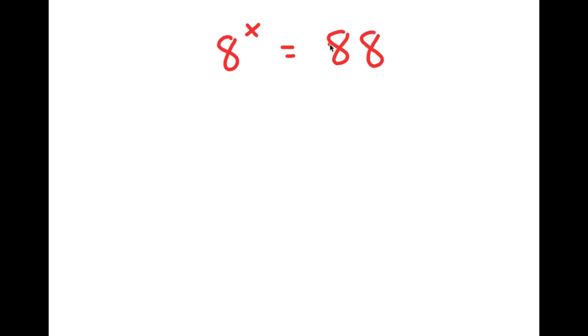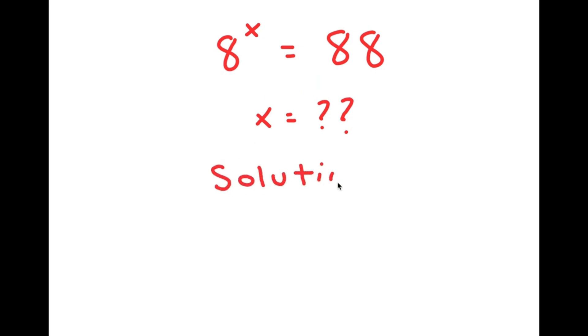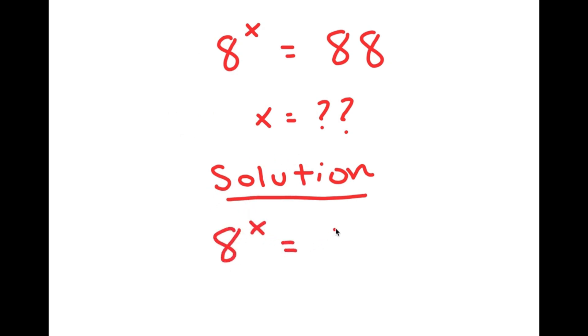In this video, I'm going to be solving the equation 8 to the power of x is equal to 88. My only variable is x, so that's what I'm going to be solving for. I'll start by rewriting my equation down here so I have a little more solving space. My equation is 8 to the power of x is equal to 88.